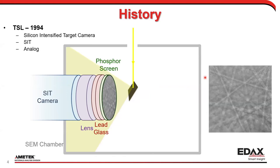In 1994, using what's called a SIT camera — a Silicon Intensified Target — they were able to automate the entire process. You could move the beam and get patterns, but this was sub-patterns per second back in the day. An entire map would run overnight to get an EBSD map — not that great.